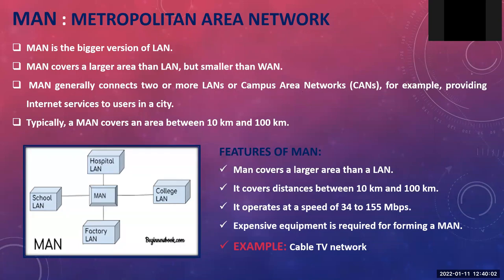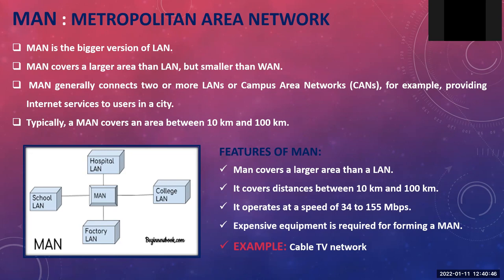A Metropolitan Area Network (MAN) is a bigger version of LAN. While LAN covers one building, MAN can cover a city — a larger area than LAN but smaller than WAN. MAN generally connects two or more LANs or campus area networks to provide internet services to users in a city. A cable network in a city is an example of MAN, covering an area of around 10 to 100 kilometers.